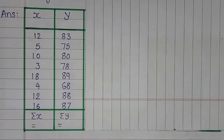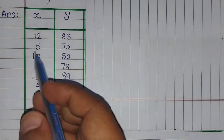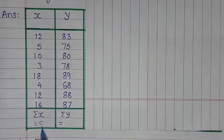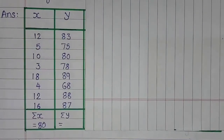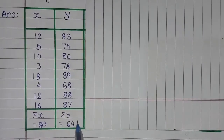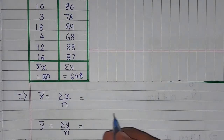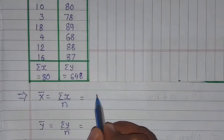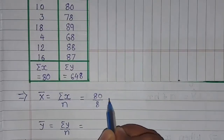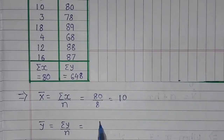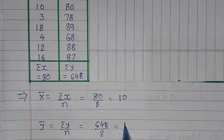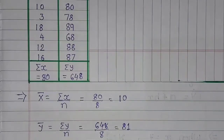As per our first step, we will find sigma x and sigma y because we have to find the value of x-bar and y-bar. The value of sigma x will be 80 and the value of sigma y is 648. So x-bar equals sigma x upon n, which is 80 divided by 8, giving x-bar equal to 10. And 648 upon 8 gives y-bar equal to 81. You can see that our x-bar and y-bar are both integers.